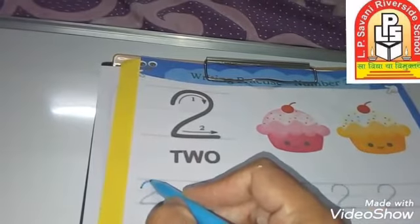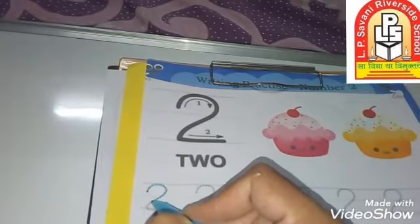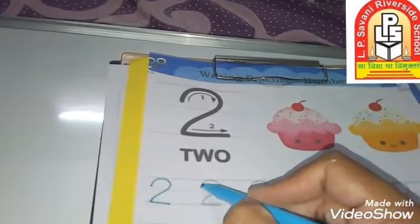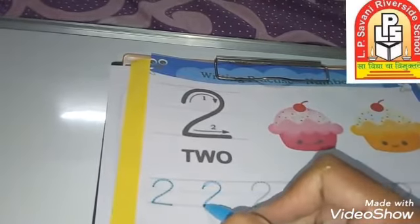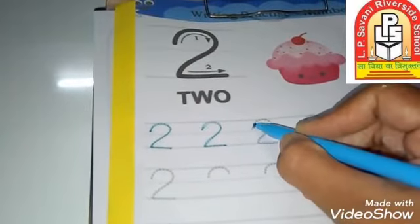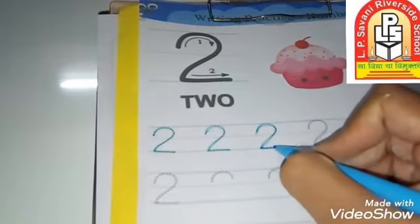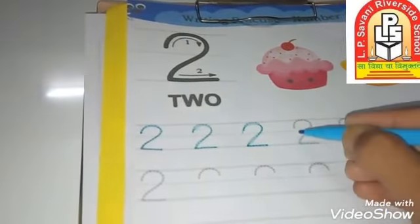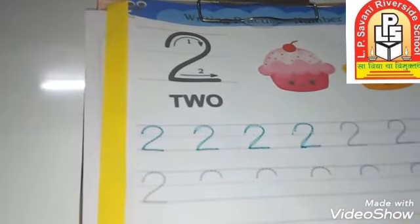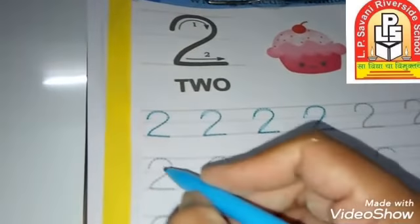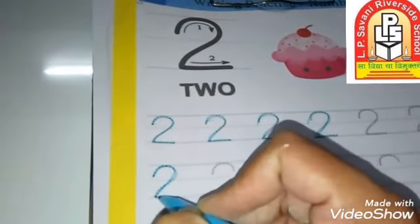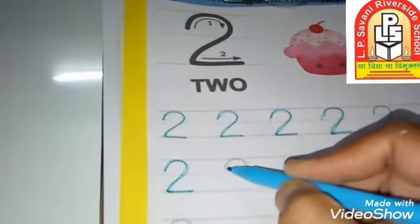Pahle hum is tarah se tracing karengi. This is number 2. Write again — curve and slipping line, number 2. Curve and slipping line make number 2. Make number 2.